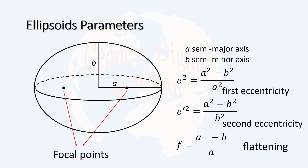We know that if we look at a biaxial ellipsoid from above, we will see a circle. And if we look at it from the side, it will be an ellipse. Therefore, it is easier to discuss the geometry of the ellipse first, because the geometry of a circle is natural.